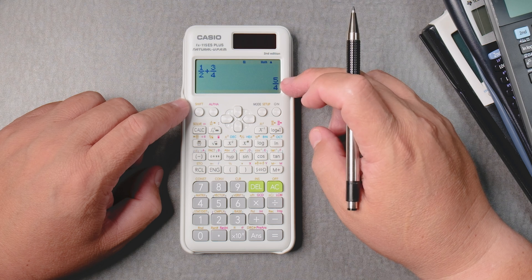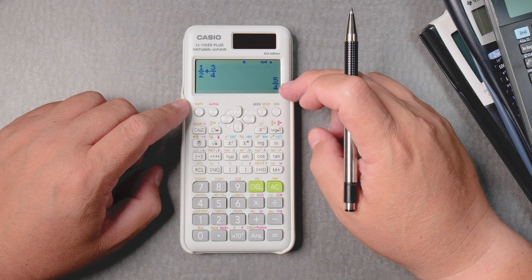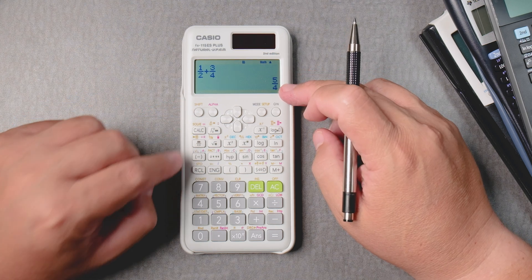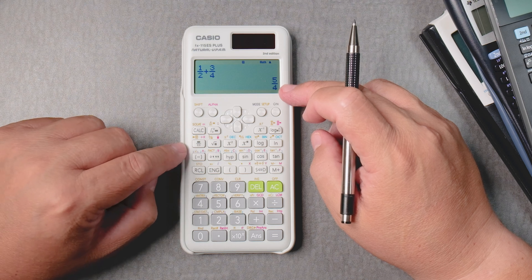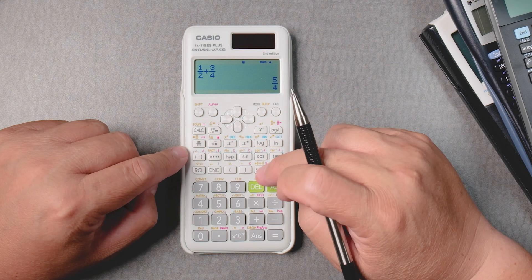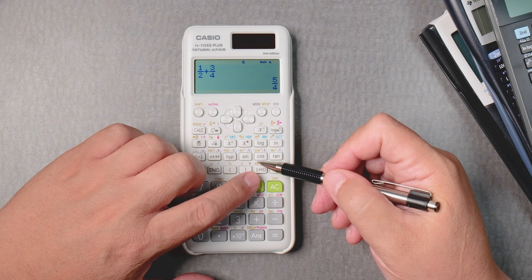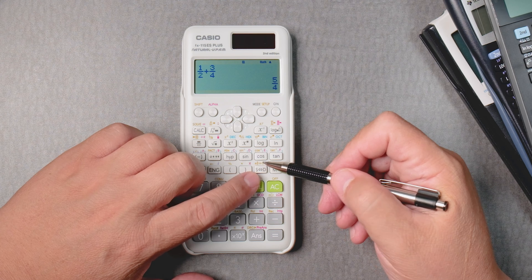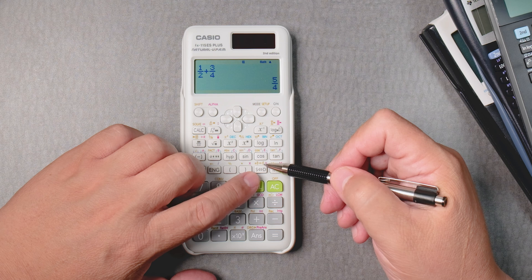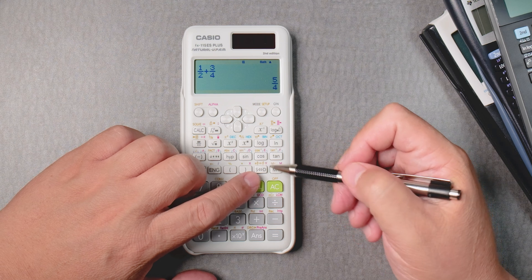Let's say I want the mixed number of this. And to do that, let's see if I remember. Here, on the top right here. A, B, C, to D over C, I think it says right there. Small print.